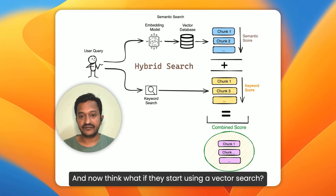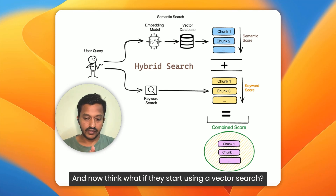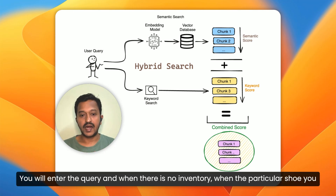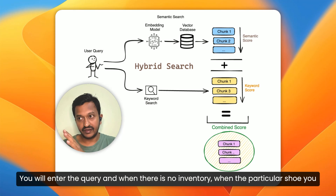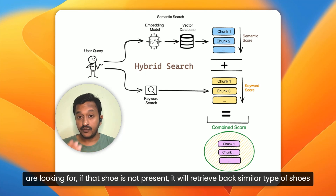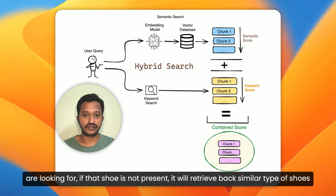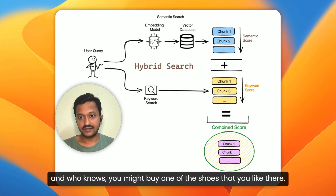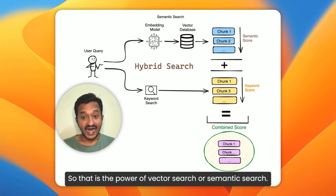Now think: what if they start using vector search? You enter the query and when the particular shoe you are looking for is not present, it will retrieve back similar types of shoes. And who knows, you might buy one of the shoes that you like there. That is the power of vector search or semantic search.